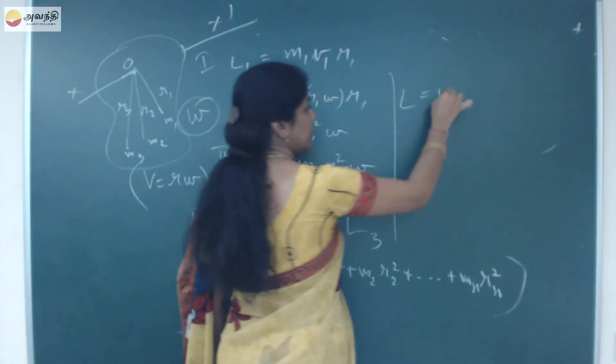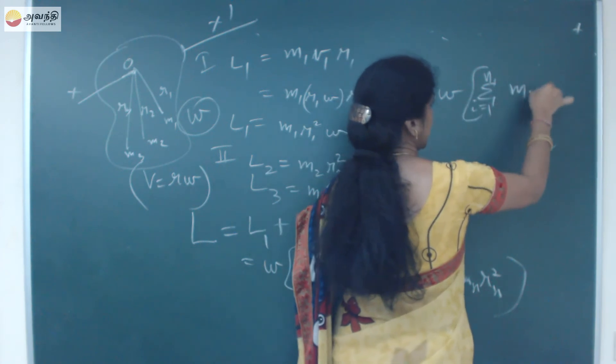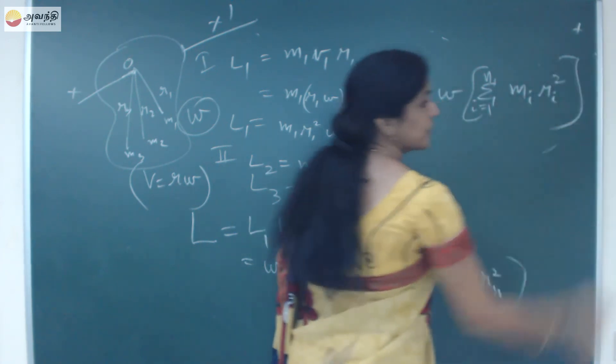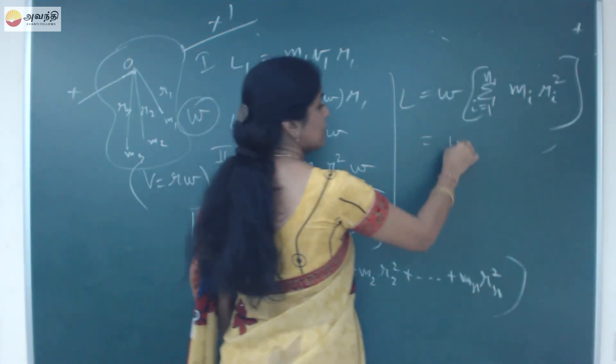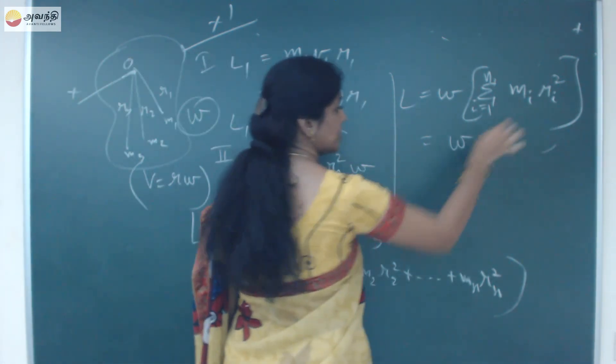If I write like this, it will be omega, sigma i equals 1 to N, Mi, Ri square. This is nothing but your sum of mass into square of the distance, which is moment of inertia.